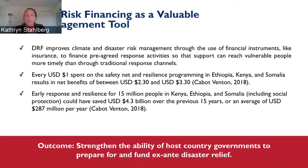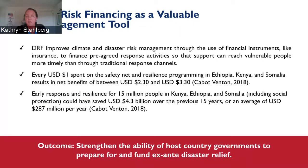The outcome we're looking for is to help partner governments build systems where they can pre-plan and pre-arrange financing for known disasters such as cyclones, drought, and floods. We don't know when the disaster will happen, but we know it'll happen. We don't know the frequency or the severity, but we need to prepare ahead. This type of pre-arranged financing can save lives, livelihoods, and it also saves money. If we can invest in these resilient systems in advance of shocks and stressors, people will not have to negative-cope as much, and we will be more successful at our jobs.